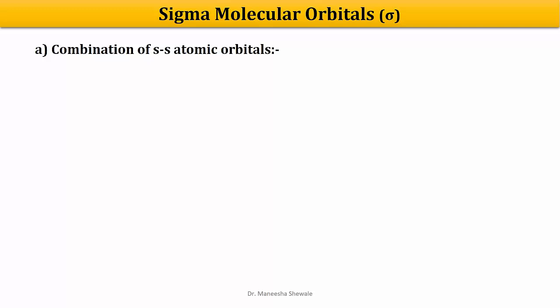First we will understand the formation of sigma molecular orbitals, which are formed by the combination of two S atomic orbitals. The S orbitals are spherically symmetric, and the electron density is uniformly distributed around the nucleus. In an earlier video, we discussed the LCAO — that is, the linear combination of atomic orbitals principle — and studied that atomic orbitals can be represented as wave functions.